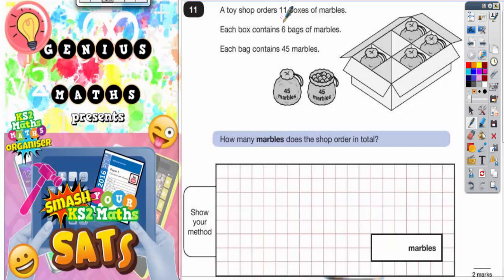Question 11. A toy shop orders 11 boxes of marbles. Each box contains six bags of marbles and each bag contains 45 marbles.